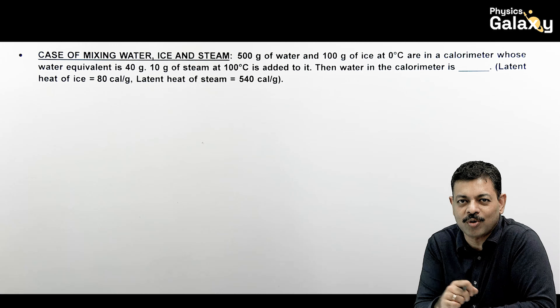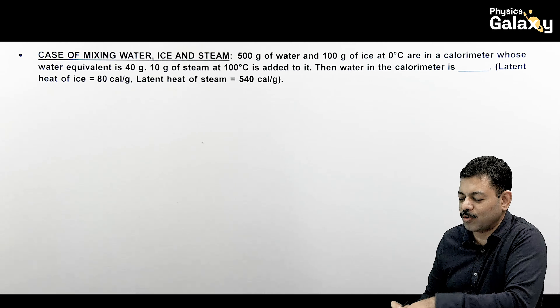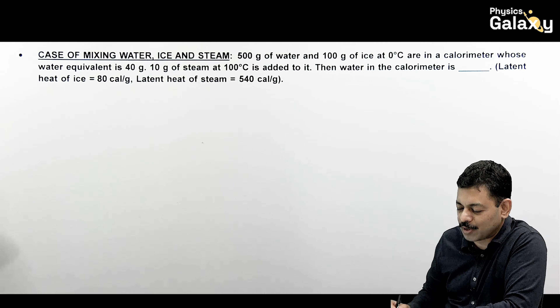This one is in the calorimetric relations which you have studied at grade 9-10. Here we just need to analyze the mixing cases of ice, water, and steam as well as the general cases in calorimetry. One is the rise in temperature due to heat, where you use Q = msΔT, and the other is phase change where you use Q = mL. Let us have a look at some cases.